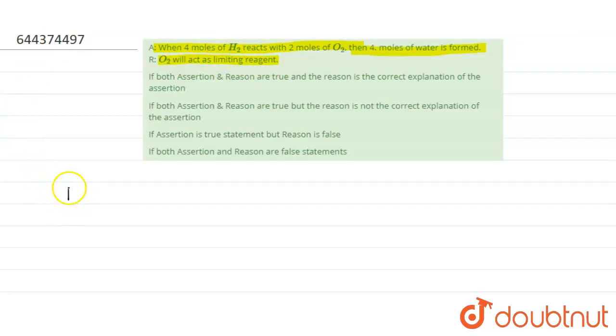So we'll just see what is the reaction: H2 is reacting with O2 and water is formed. We'll first balance it. And in this, how many moles are given? Four moles and then two moles and then four moles.